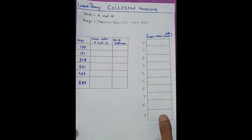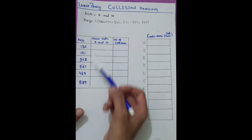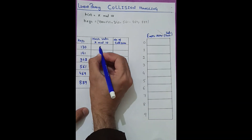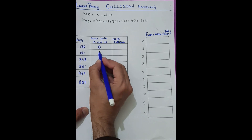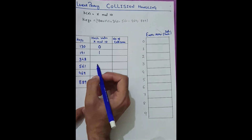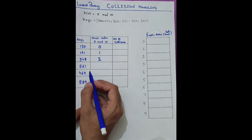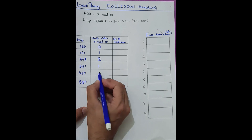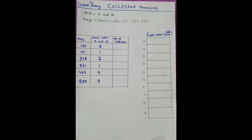For example, 130 mod 10 = 0, 141 mod 10 = 1, 342 mod 10 = 2, 561 mod 10 = 1, 469 mod 10 = 9, and 889 mod 10 = 9. So the first step is to calculate the mod of all values with respect to the hash function.